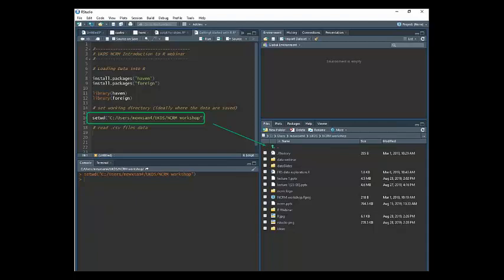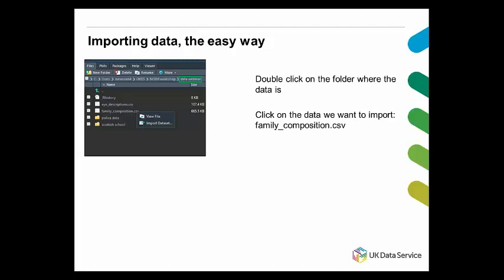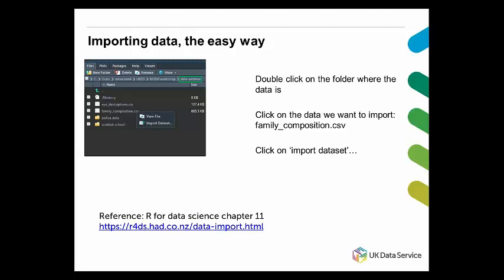The data that I want to use is in the data webinar folder. As I mentioned before, this file explorer lets you click on any folder and explore what you have there. I'm going to show you the easy way to import datasets in R — this way only works if we have the tidyverse package installed and loaded. We're going to focus on the file explorer window, and I'll click on the data webinar folder where my data is saved. I want to import the family composition dataset — I just click on the name of the data and RStudio gives me two options: View File and Import Dataset.